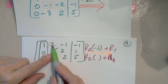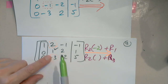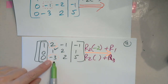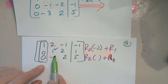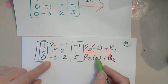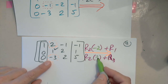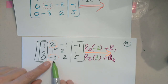So 1 times negative 2 plus 2 will be 0. And what about for negative 3? What should I multiply 1 by to get a 0 here? 3. 1 times 3 will be 3, minus 3 will be 0.